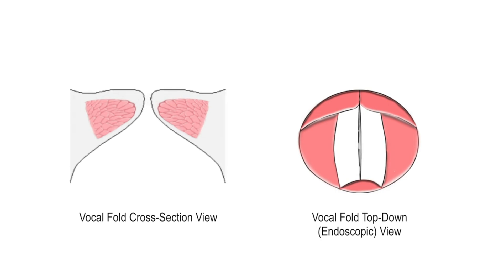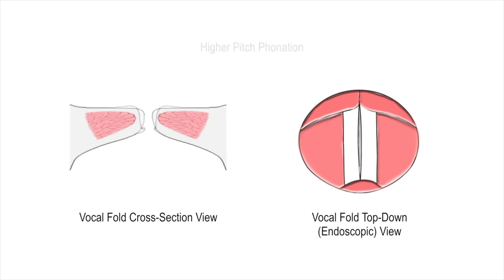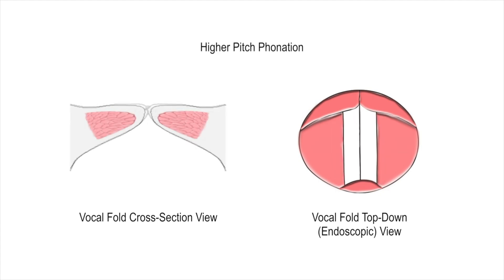Changes in pitch can alter how the vocal folds vibrate. As pitch increases, cricothyroid muscle activation causes the vocal folds to elongate and thin out, reducing the difference between the upper and lower margins. Vocal fold vibration speeds up, resulting in more vibration cycles completed per second.